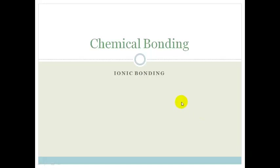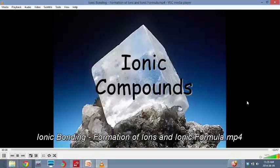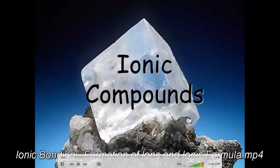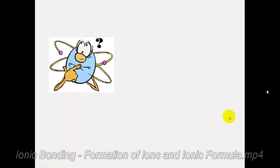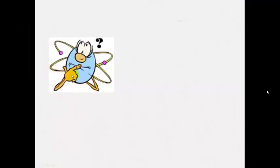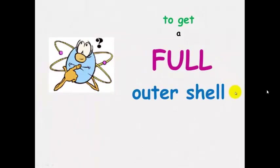Now that we've learnt about covalent bonding, let's learn about ionic bonding, the formation of ions, and also the ionic formula. Ionic compounds form between metals and non-metals. It's every atom's dream in life to get a full outer shell of electrons, and this is how ionic bonding forms.